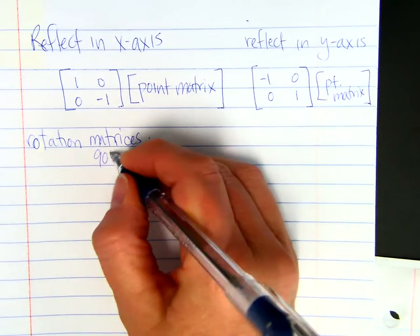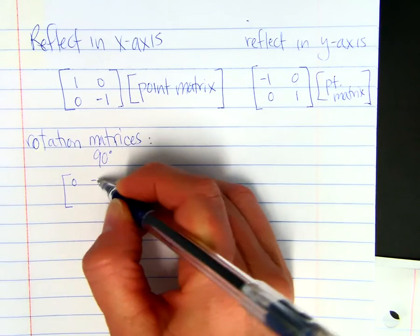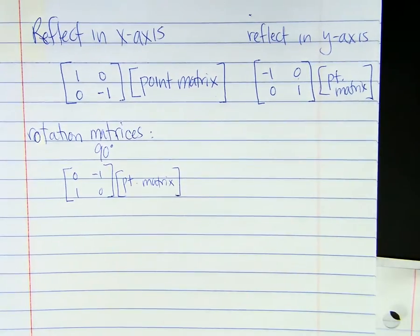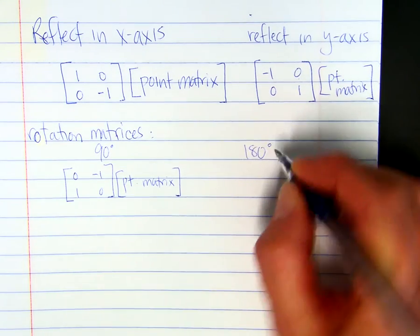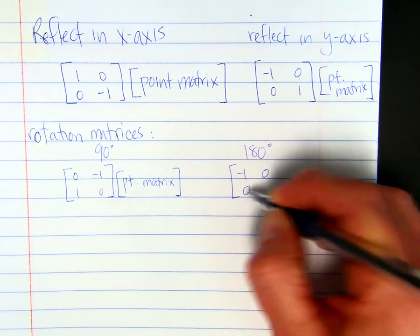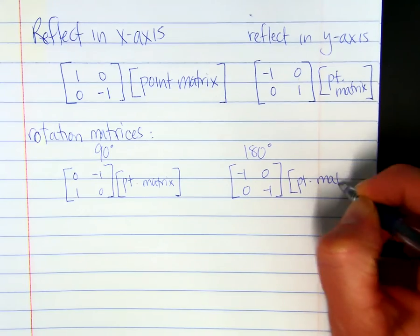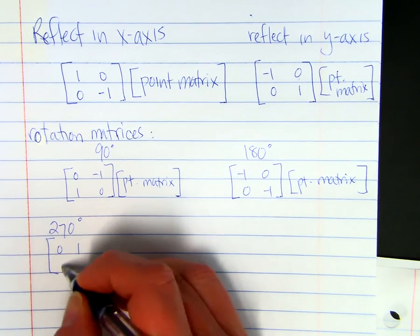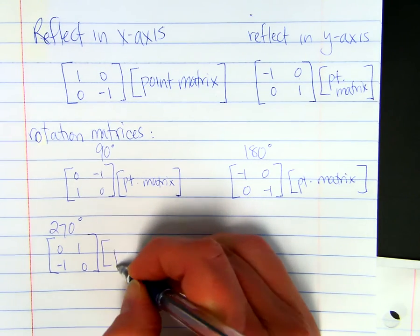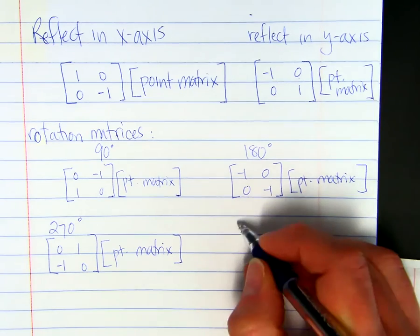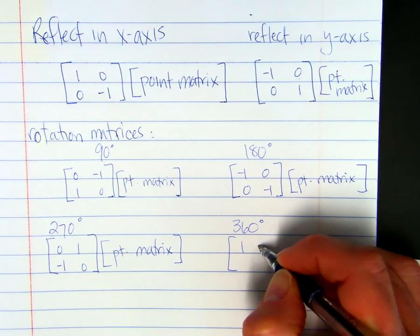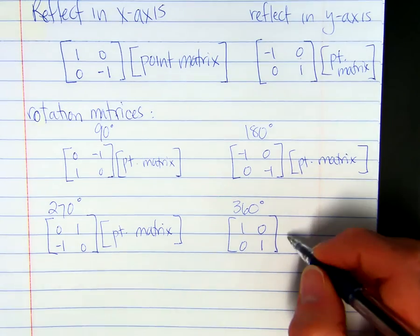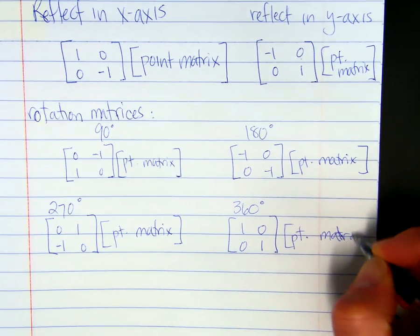For rotation matrices: to rotate 90 degrees, use the matrix 0, negative 1, 1, 0 times your point matrix. For 180 degrees, it's negative 1, 0, 0, negative 1 times your point matrix. For 270 degrees there's another matrix, and 360 degrees uses the identity matrix — which is kind of pointless since it returns the exact same thing. The 360-degree rotation being 'pointless' got a laugh.